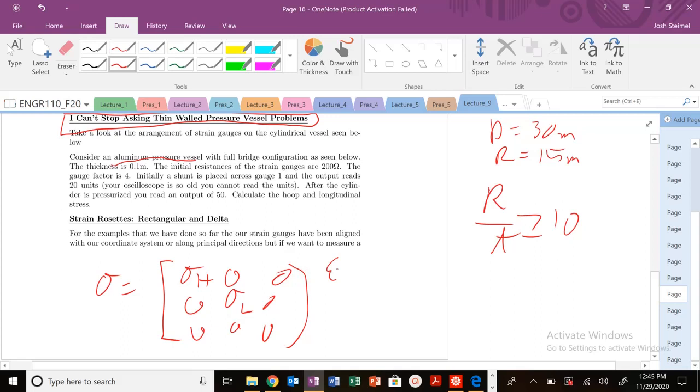I'm going to have a hoop strain: 1 over E times sigma hoop minus nu times sigma L. I'm going to have a longitudinal strain: 1 over E times sigma L minus nu sigma hoop. And that's it.